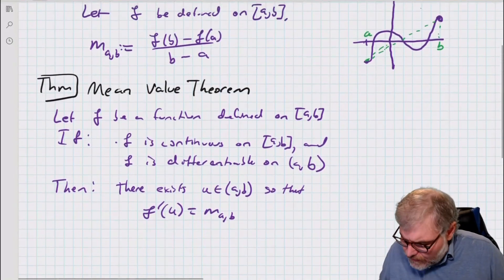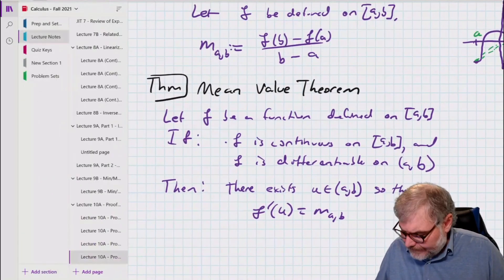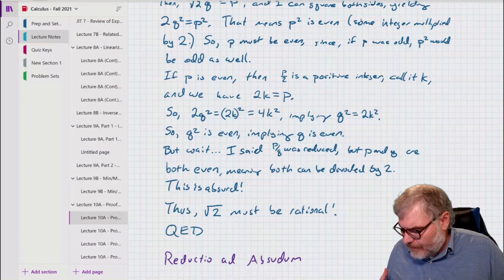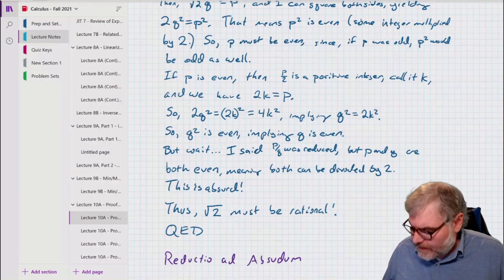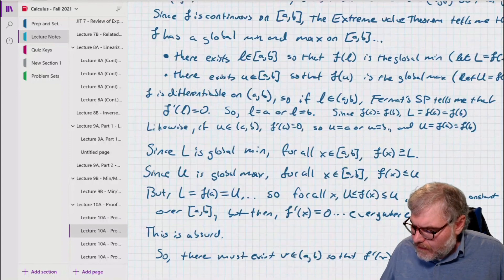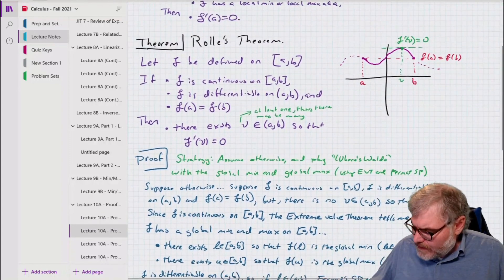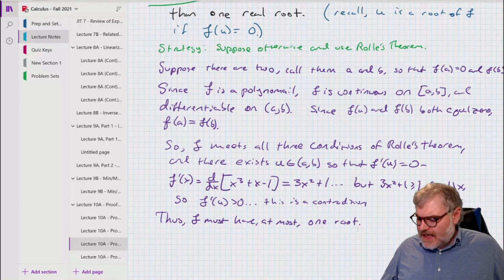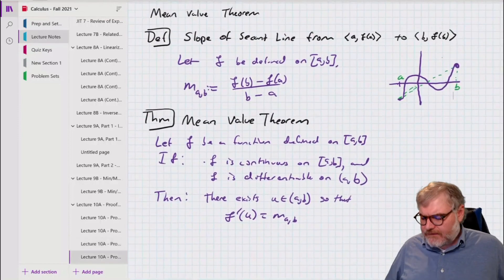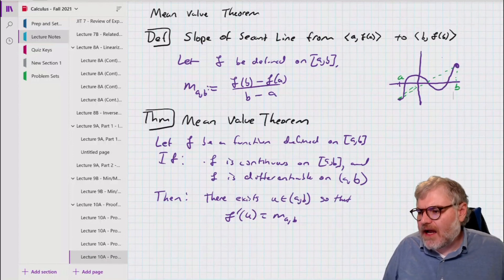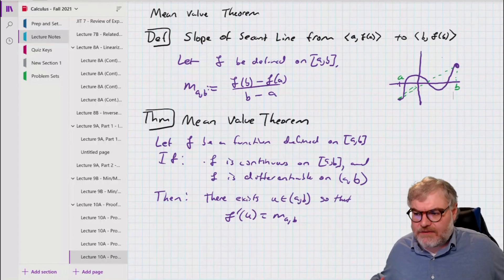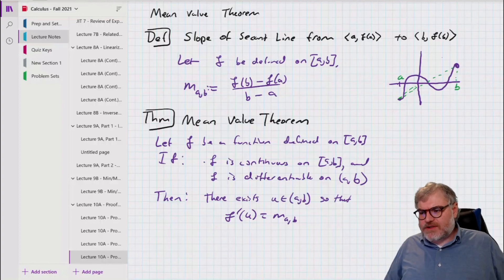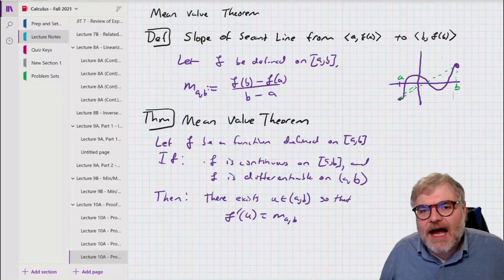So there's some place in the middle where the slope of the tangent line equals the slope of the secant line, and we're going to pick that up next time. What we did today: we talked about the overview of where we're going, did proofs by contradiction and that really cool proof that the square root of 2 is irrational, proved Rolle's theorem, and did an example. Next time we're going to prove the Mean Value Theorem and use it to prove that antiderivatives are vertical shifts of each other, which will be very important. I hope you thought it was cool — see you next time.